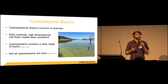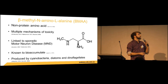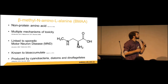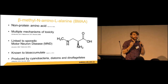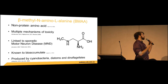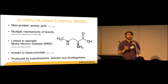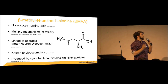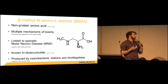The toxin I'm going to talk about today is beta-methyl-amino-L-alanine, otherwise known as BMAA. It's a non-protein amino acid, meaning it's not one of the 20 or so amino acids responsible for protein synthesis. It is shown to be neurotoxic and has multiple mechanisms of toxicity. BMAA has been linked to sporadic cases of motor neuron disease around the world — there are several locations with high prevalence of motor neuron disease where BMAA has been found in the local environment and suggested as the cause.